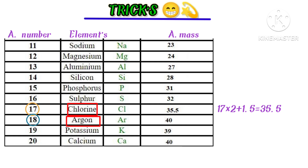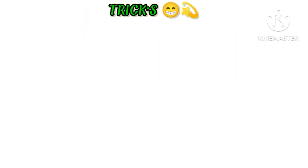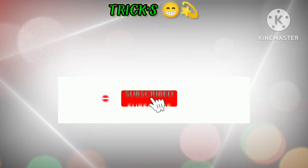The next exceptional case is argon, with atomic number 18. There is no special trick for argon — you just have to remember its atomic mass, which is 40. Now you understand how to calculate the atomic mass of elements 1 to 20. In the next video, I will teach you elements 21 to 30.